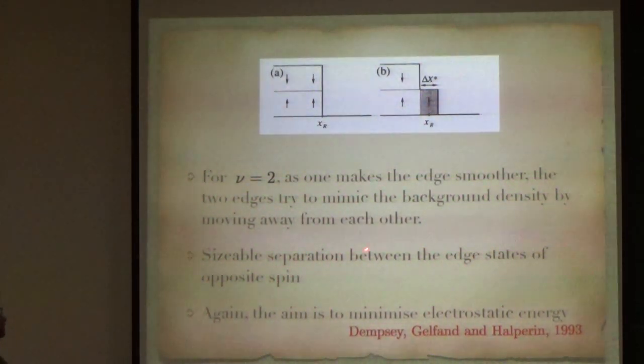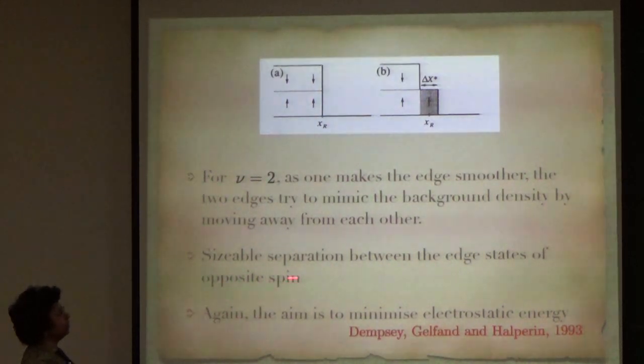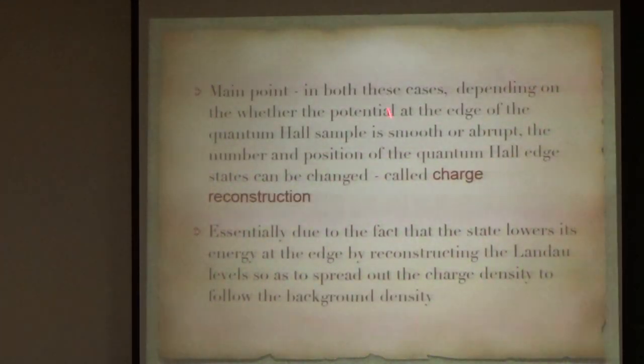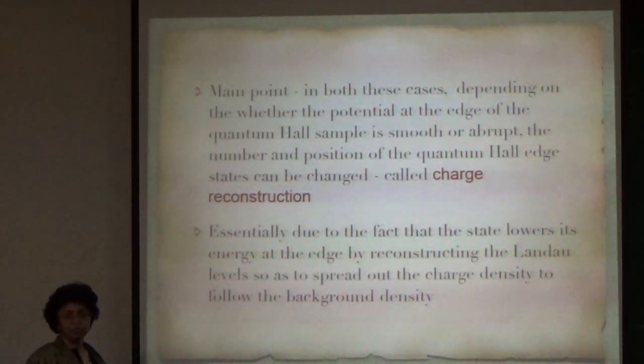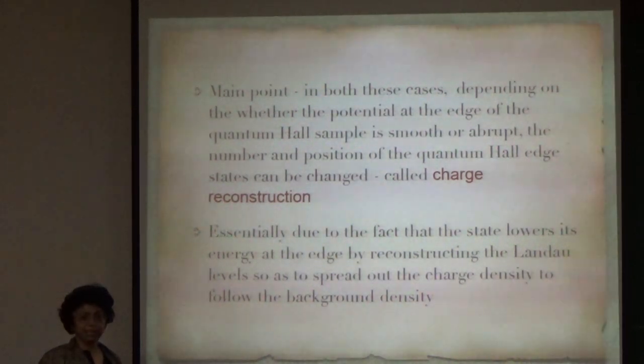You get actually a sizable separation between the edge states of opposite spins. The aim is again to minimize the electrostatic energy. So, the point I want to make is that in both these cases, depending on whether the potential at the edge of the quantum Hall sample is smooth or sharp, the number and position of the quantum Hall edge states can be changed. And this is something which is called edge reconstruction and has been seen experimentally as well.